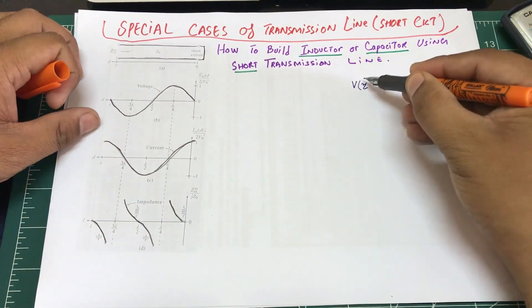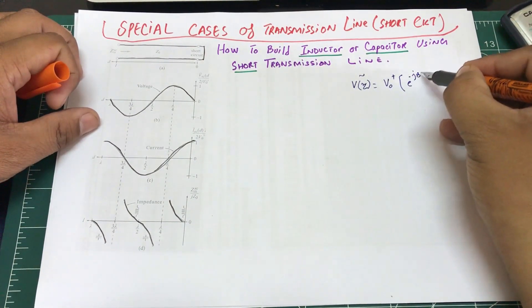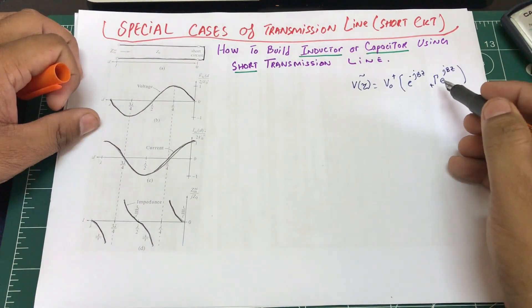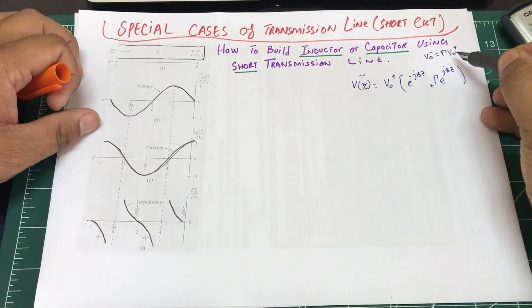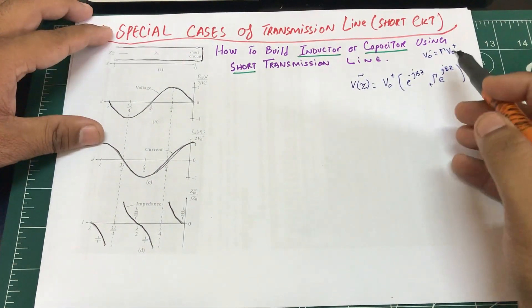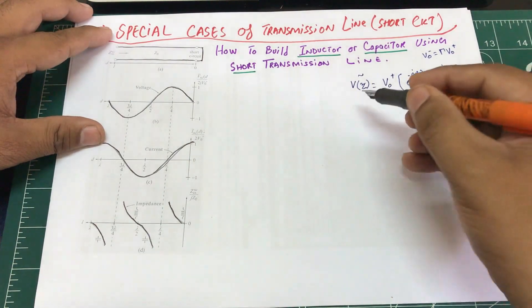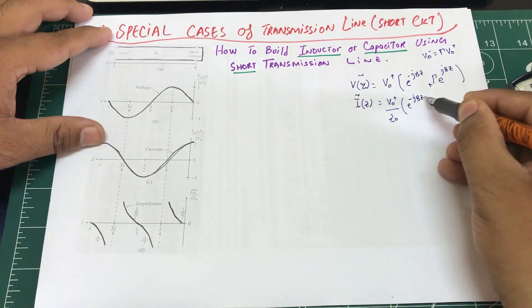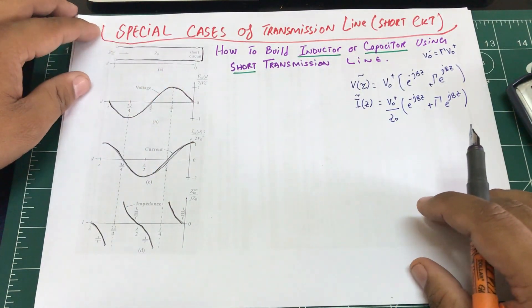We start with our basic equations: V(z) = V₀⁺ · e^(−jβz) + Γ · e^(jβz), where I've made the replacement V₀⁻ = Γ · V₀⁺. And I(z) = (V₀⁺ / Z₀) · [e^(−jβz) + Γ · e^(jβz)].